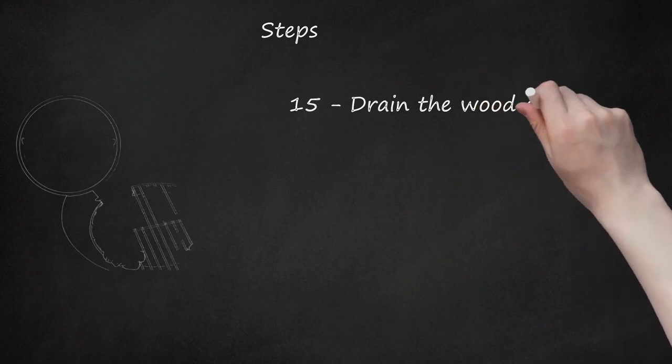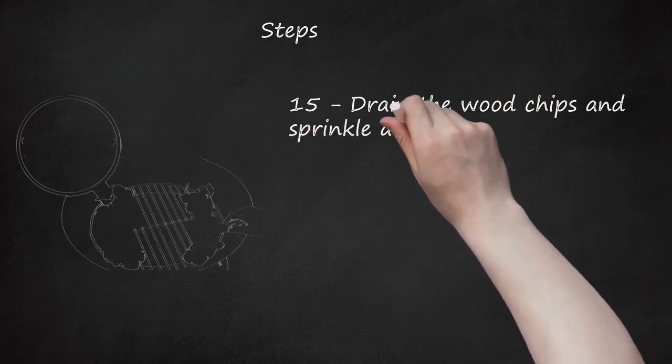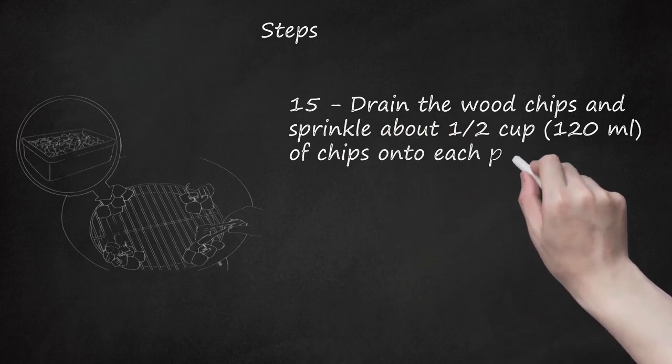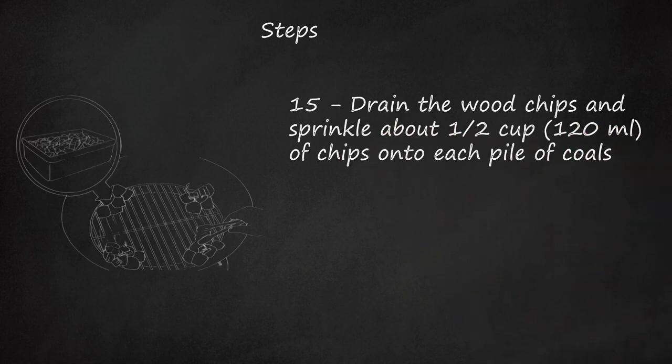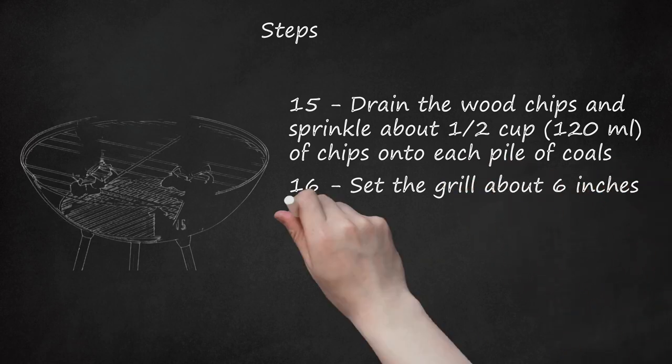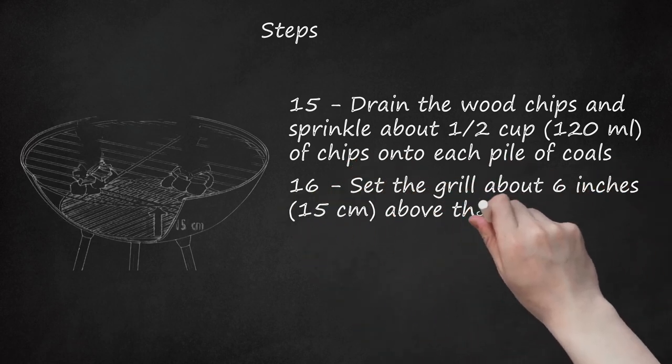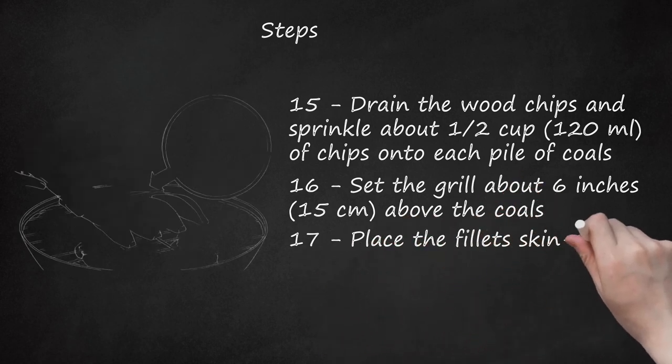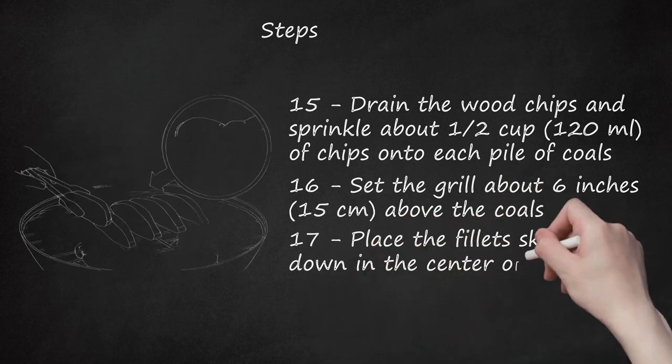Step 15: Drain the wood chips and sprinkle about 1/2 cup (120 milliliters) of chips onto each pile of coals. Step 16: Set the grill about 6 inches (15 centimeters) above the coals. Step 17: Place the fillets skin side down in the center of the grill and cover it.